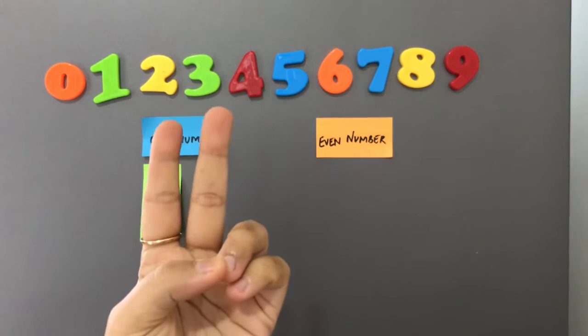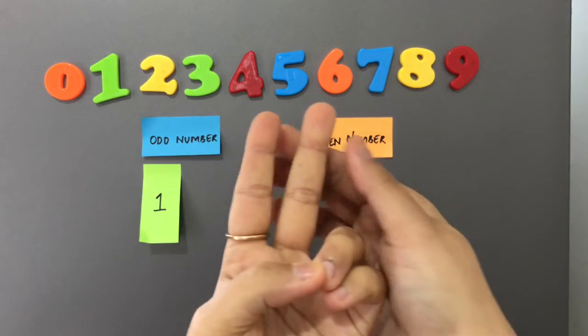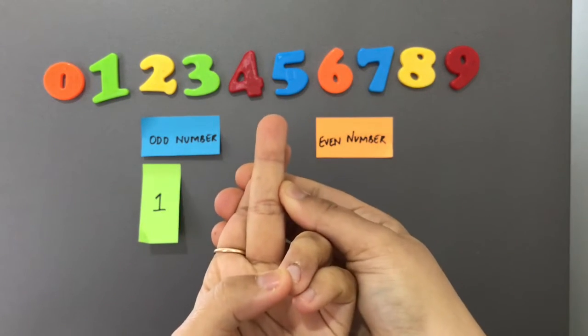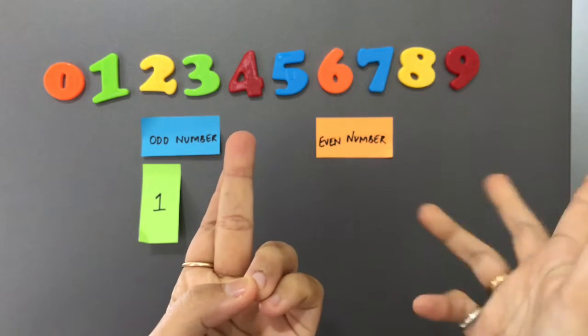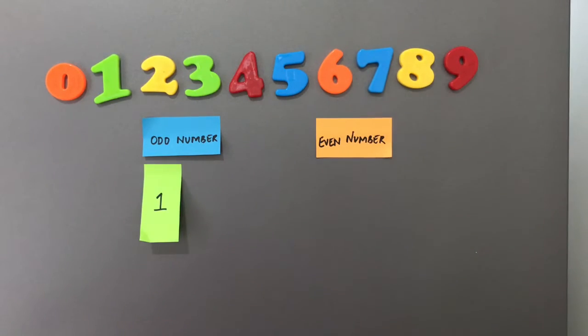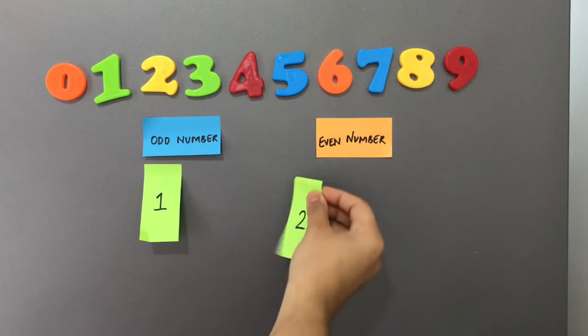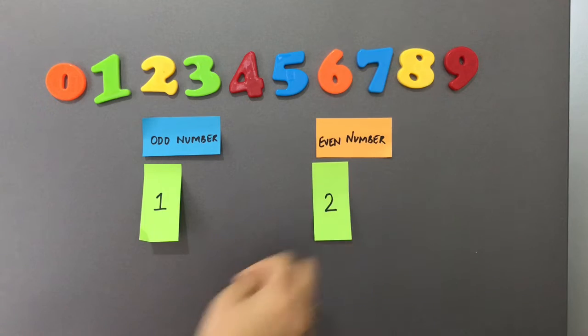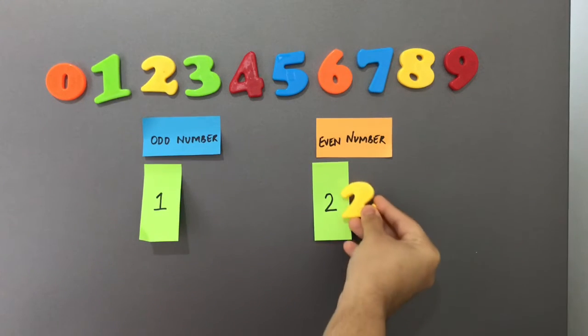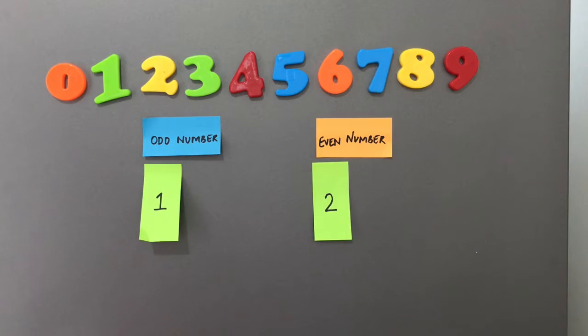Coming to number two. Now I have a friend to play with on the seesaw. So no friend is left alone. So number two is an even number. Or I can put the manipulative two.